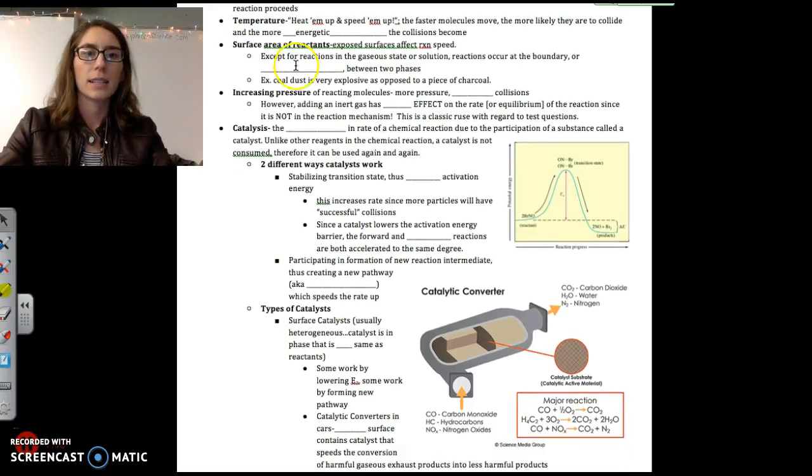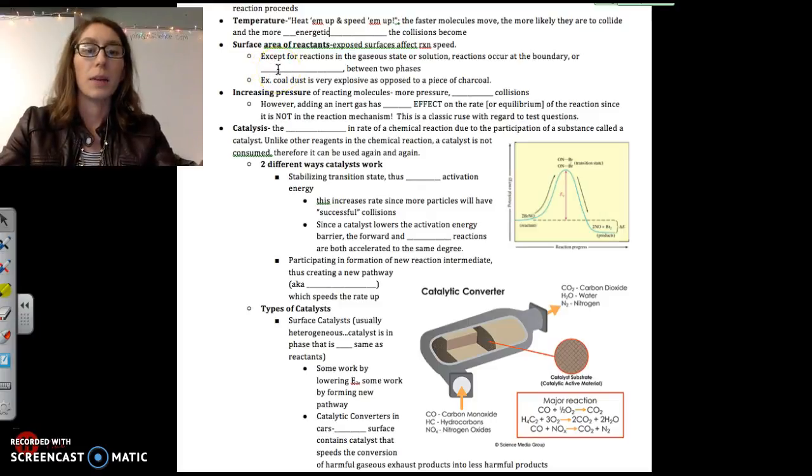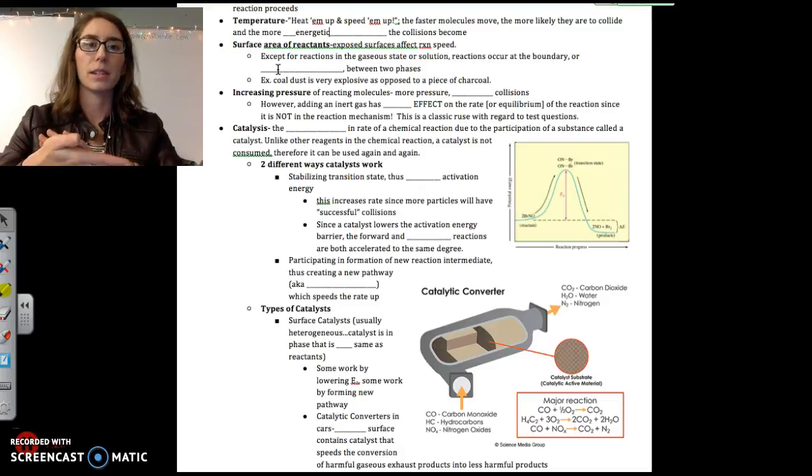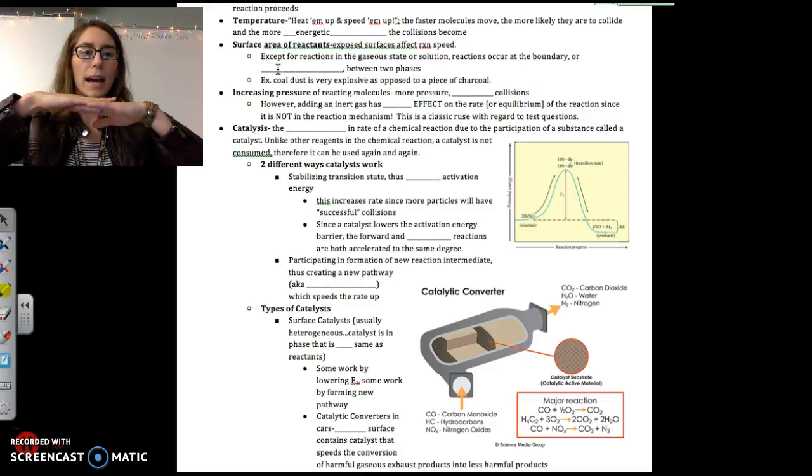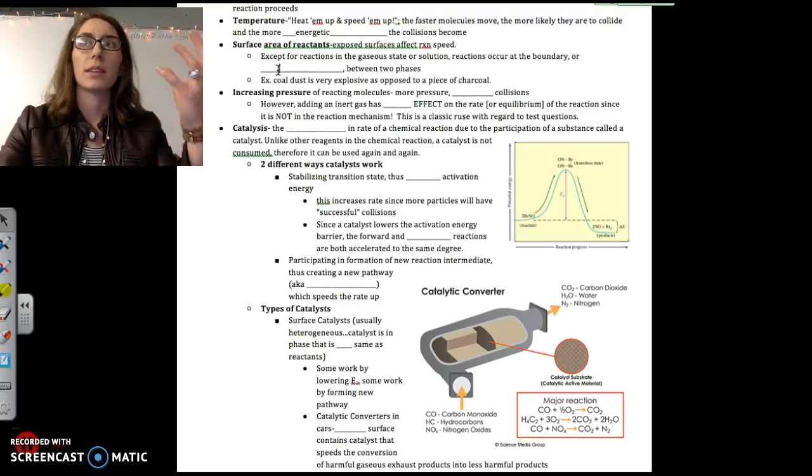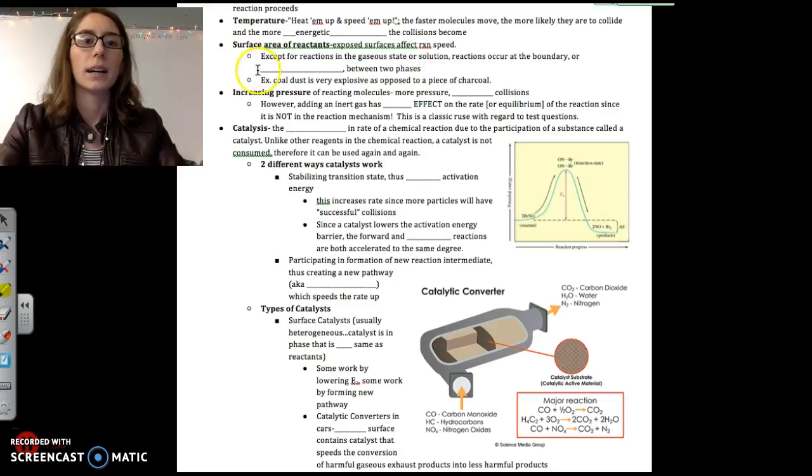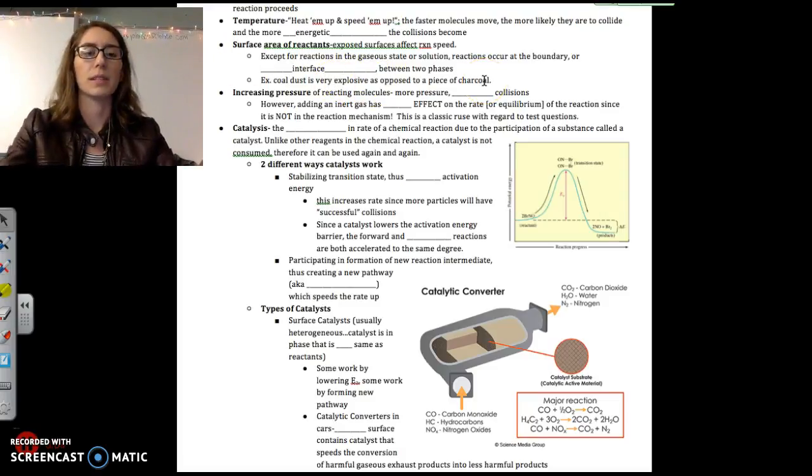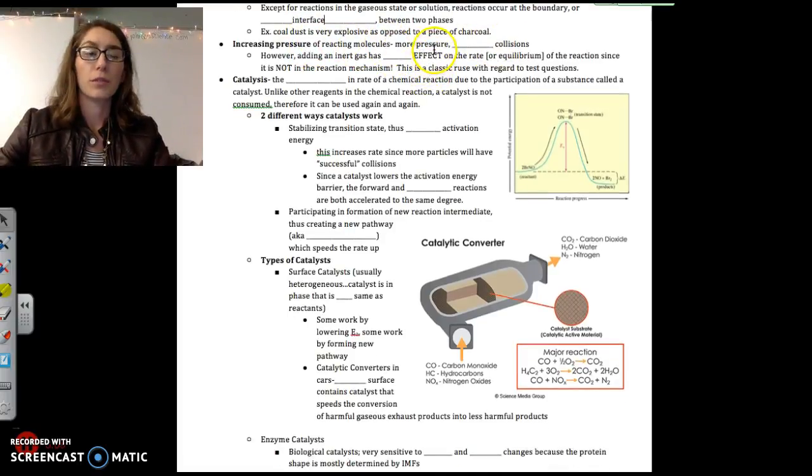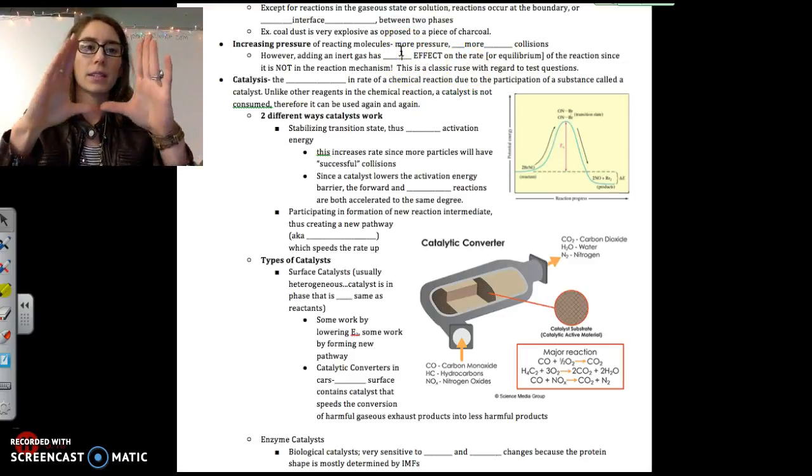The surface area of reactants. Exposed surfaces do affect reaction speed. So more exposed surface, more reaction speed. That is mostly talking about reactions that happen between two separate phases. So if you have a solid and a liquid interacting, the more surface area you have between them, the greater the speed of the reaction. If you think about the blue bottle reaction that we saw, there was a reaction between the liquid and the air above it. It was only when we mixed the two that we really saw the reaction happen quickly. That space between the two is called the boundary or the interface. Coal dust and a lot of metallic dust are really reactive, as opposed to just a piece of metal or a piece of charcoal.